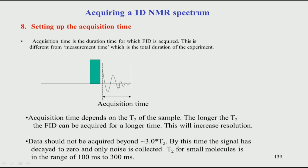The FID is the induction current — the EMF induced in the coil — and that is detected as an FID. This depends on T2: if T2 is short the signal goes down very fast; if T2 is long the signal will stay longer. The oscillation continues but is reduced in amplitude because of T2 relaxation, and at some point it goes to zero. So the acquisition time — how long you record an NMR signal — depends on the T2 of the sample.